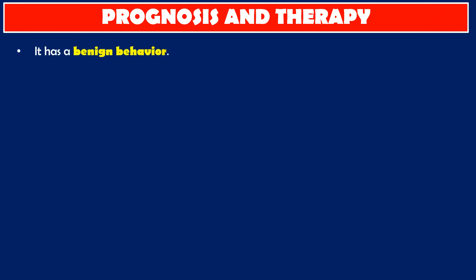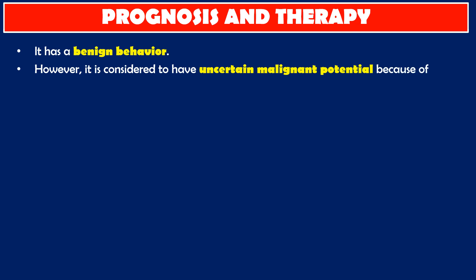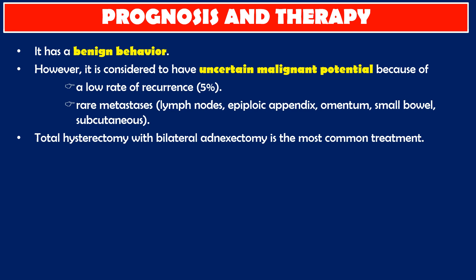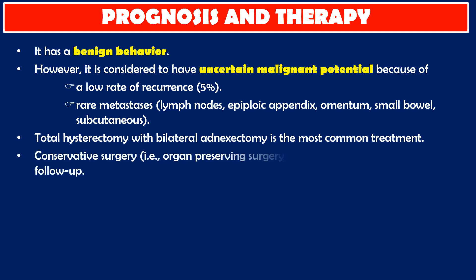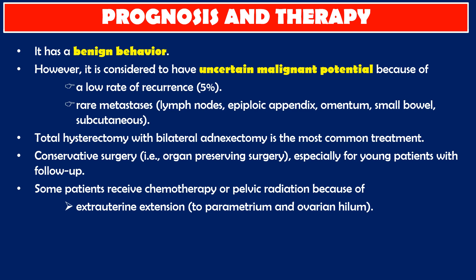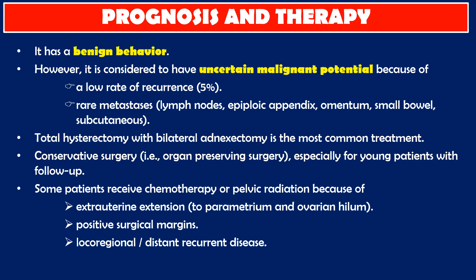Prognosis and therapy. UTROSCT has a benign behavior; however, it is considered to have uncertain malignant potential because of a low rate of recurrence — 5% — and rare metastasis to lymph nodes, epiploic appendix, omentum, small bowel, and subcutaneous tissue. Total hysterectomy with bilateral adnexectomy is the most common treatment. Conservative organ-preserving surgery is an option, especially for young patients, with follow-up. Some patients receive chemotherapy or pelvic radiation because of extra-uterine extension to parametrium and ovarian hilum, positive surgical margins, or local, regional, or distant recurrent disease.